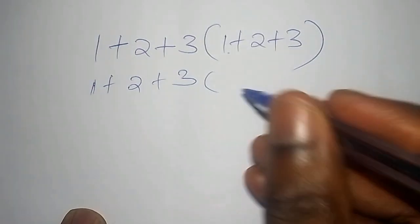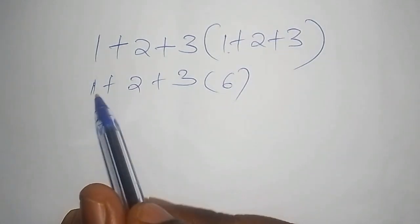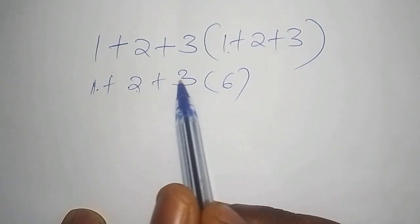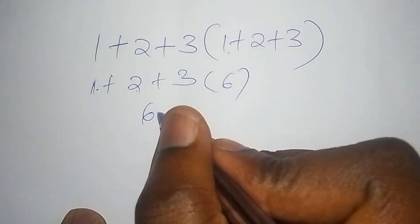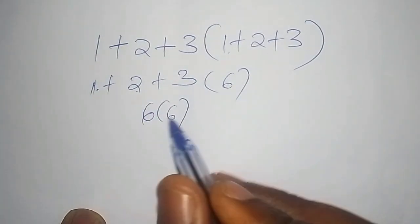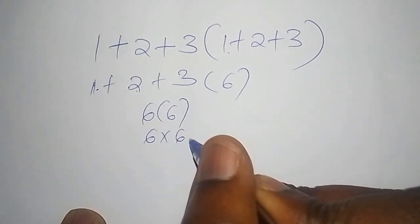Then the next step is 1 + 2 + 3, then we have 6. So 6(6), this means that you have to take 6 multiply by 6 and the answer is 36.